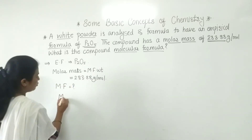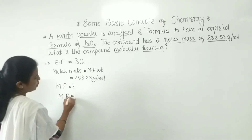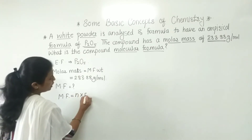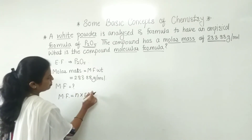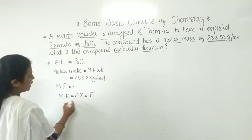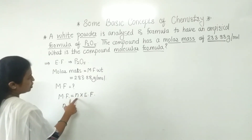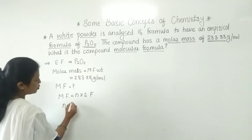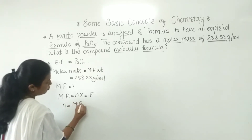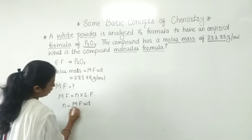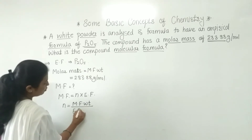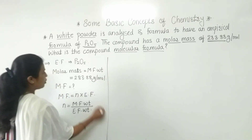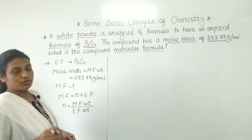The basic formula is: molecular formula = n × empirical formula. To find n, we use the formula: n = molecular formula weight divided by empirical formula weight. We already have the molecular formula weight, so we simply need to calculate the empirical formula weight.